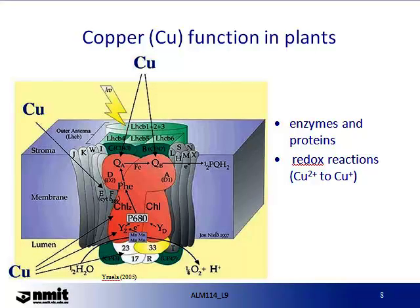Now let's discuss copper and its function or role in plants. Copper is usually taken up as cupric ion or Cu2+. It is an important component of enzymes and proteins, some of which are important in ligand formation in cell walls. Copper is also involved in photosynthesis, respiration and processes within the plant involving nitrogen. Research has shown that copper promotes seed production and formation, plays an essential role in chlorophyll formation, and is essential for proper enzyme activity.